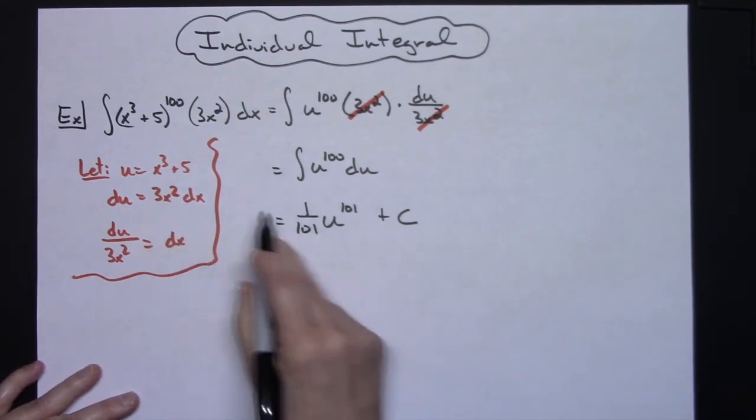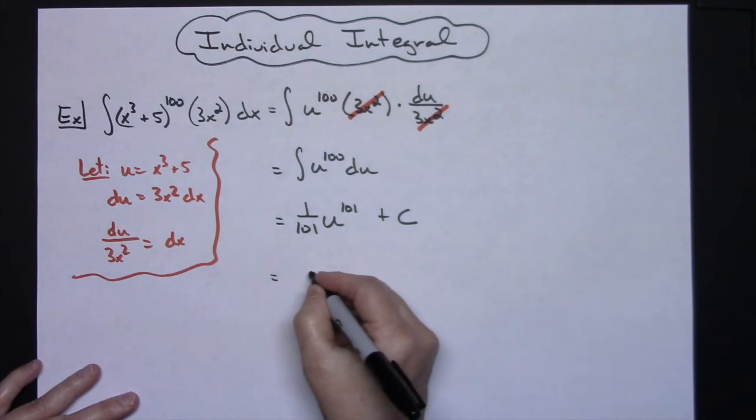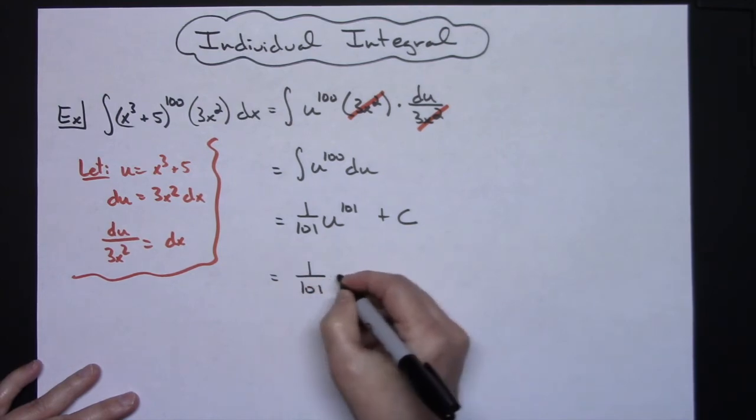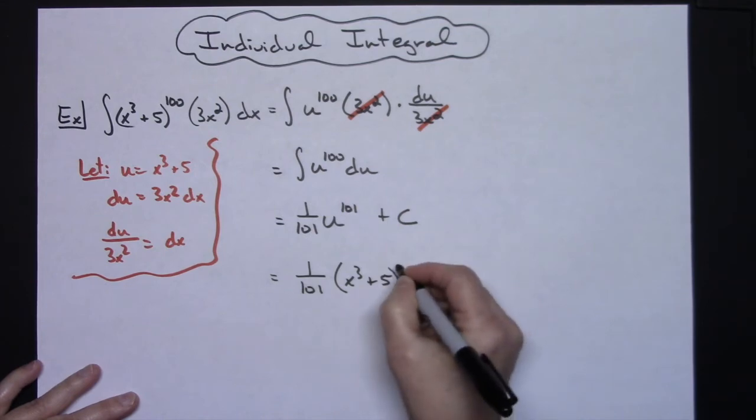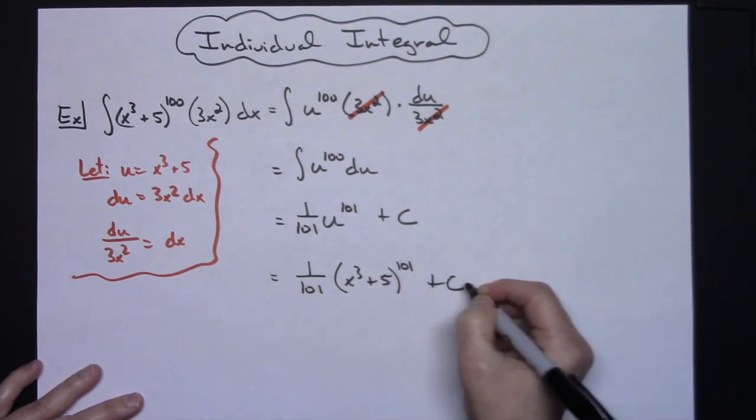Alright now at this point you can replace u with what it equals. So I'll have 1 over 101 out in front, x to the third plus 5 raised to the 101 and then plus C.